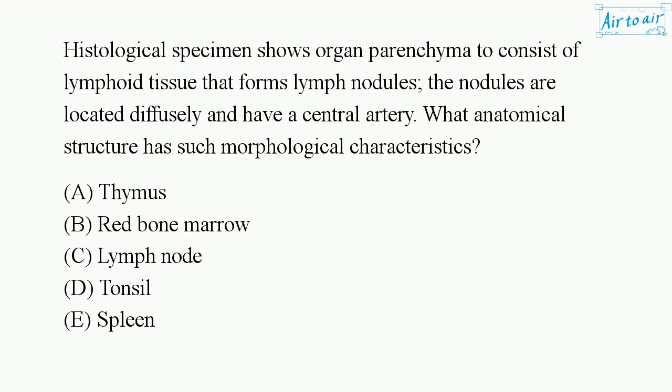Histological specimen shows organ parenchyma to consist of lymphoid tissue that forms lymph nodules. The nodules are located diffusely and have a central artery. What anatomical structure has such morphological characteristics?